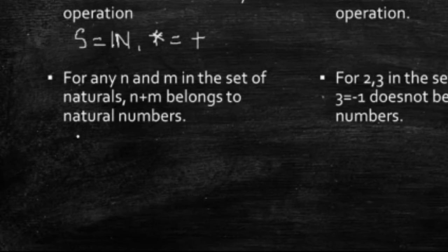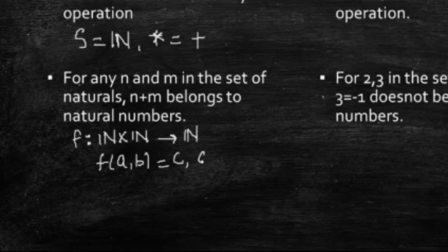So, basically, when we are proving binary operation, we are making a function, from the Cartesian product of given set, to the set itself, such that, f of (a, b) is c, where c belongs to the given set. And, equivalently, I can write it as, a★b equal to c, and c should belong to N.